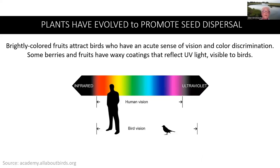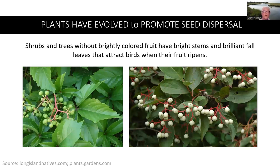In addition, plants have evolved to promote seed dispersal. Brightly colored fruits attract birds, who have an acute sense of vision and color discrimination. Some berries and fruits have waxy coatings that reflect ultraviolet light visible to birds, but not humans. Shrubs and trees without brightly colored fruits have bright stems and brilliant fall leaves that attract birds when their fruit ripens.